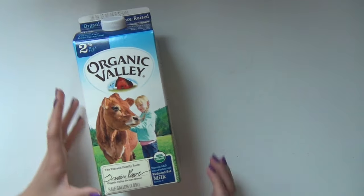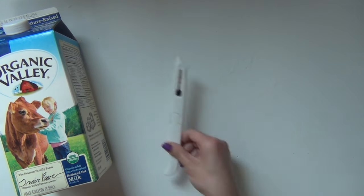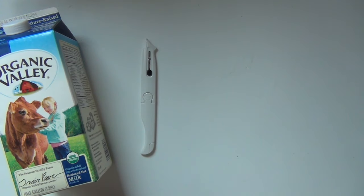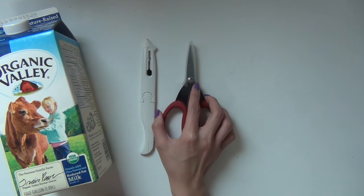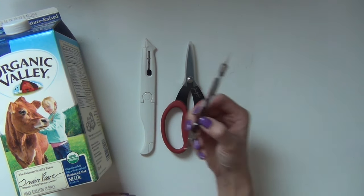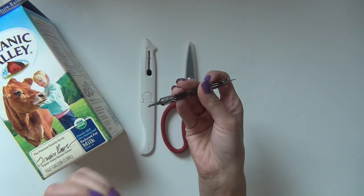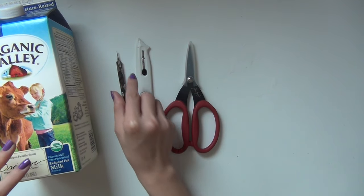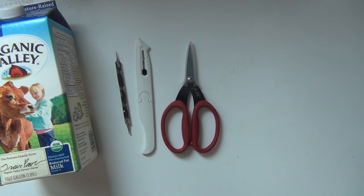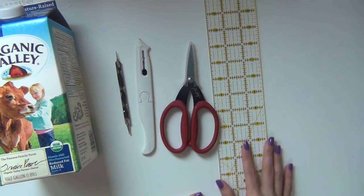You can use any of the half gallon milk or juice carton, some type of cutting tool. Here I have an exacto knife, a pair of scissors, something pointy to score the line onto our milk carton. Here I'm using a nail art dotting tool but you can also use an out of ink pen, an old pen.